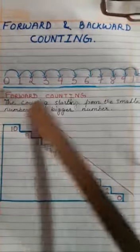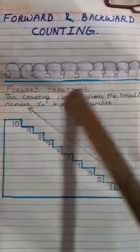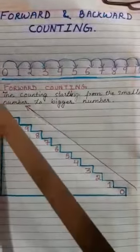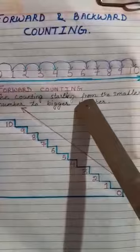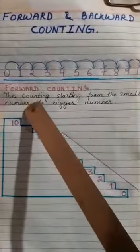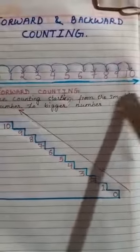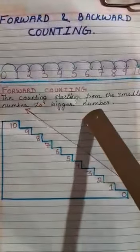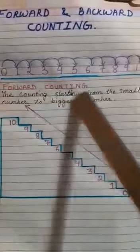See, forward counting. What is forward counting? The counting starting from the smaller number to bigger number. The counting starting from the smaller number to bigger number is called forward counting.